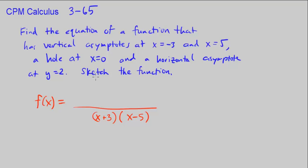For a hole at x equals 0, we also want x in the denominator — that alone would create a vertical asymptote — but we also want x in the numerator. Because at 0 it's undefined, but if we can simplify and cancel out that x, then it's just a hole and not an asymptote.